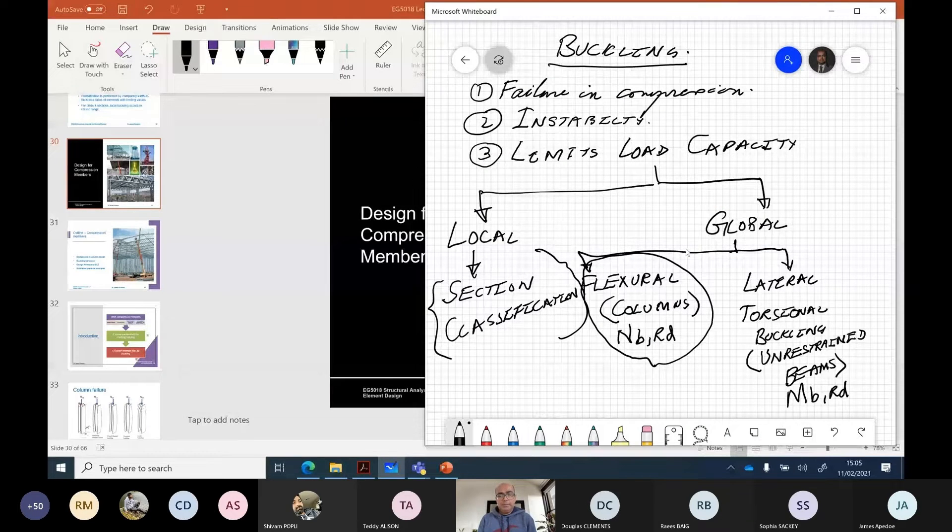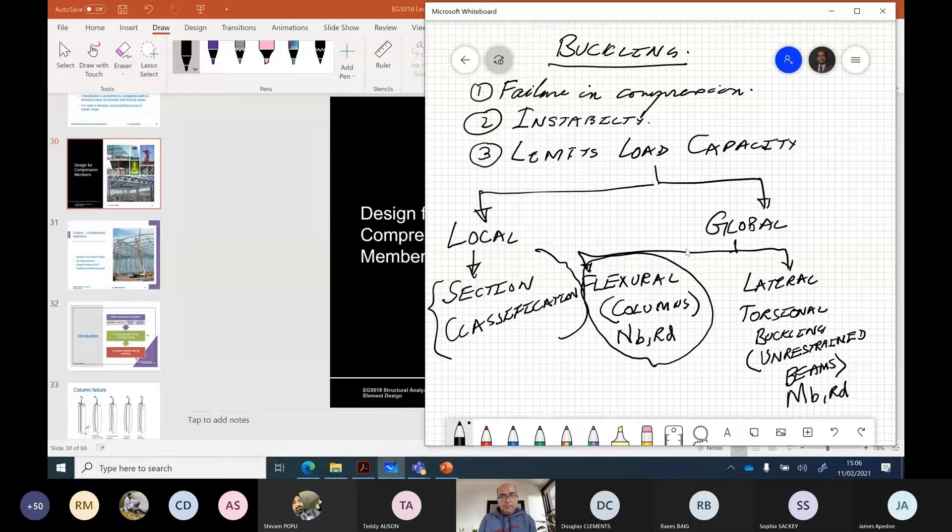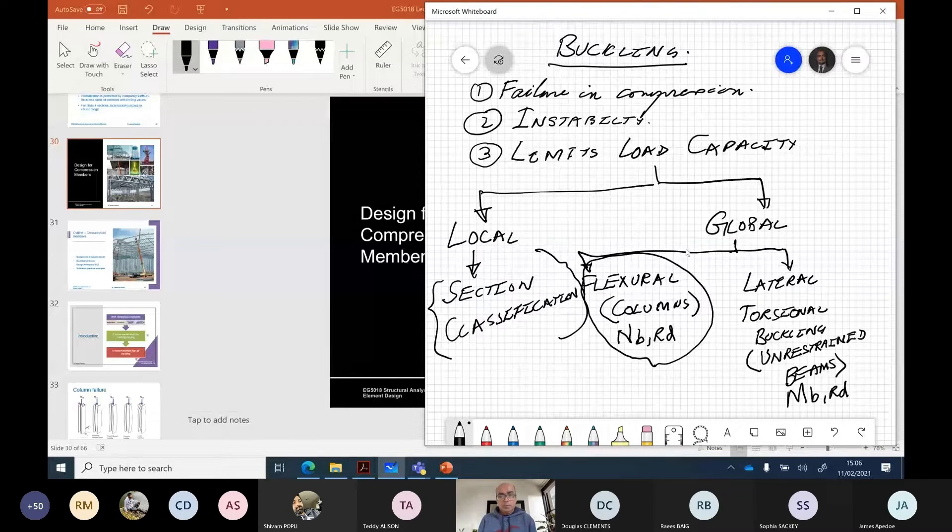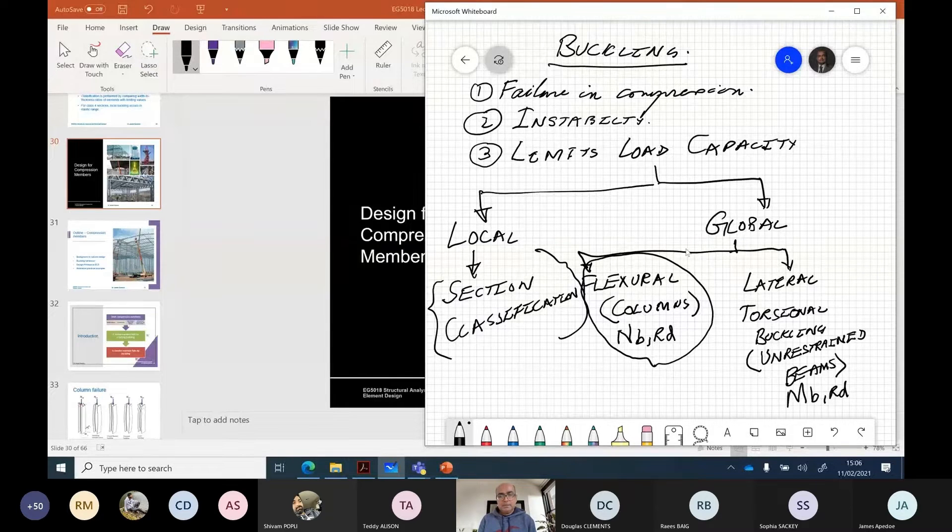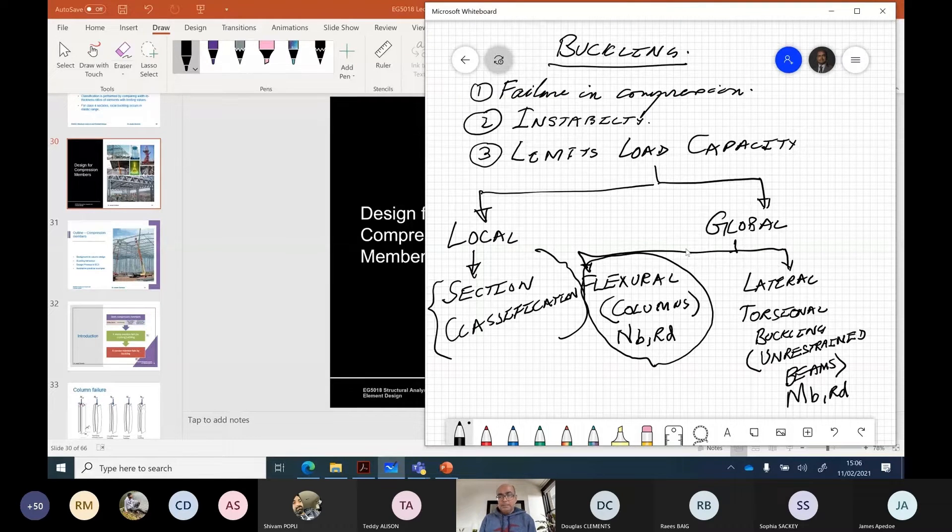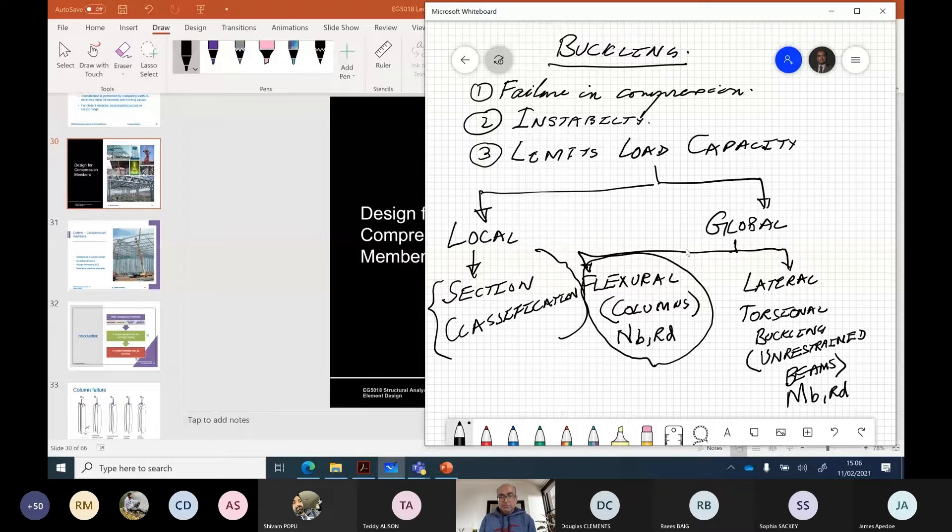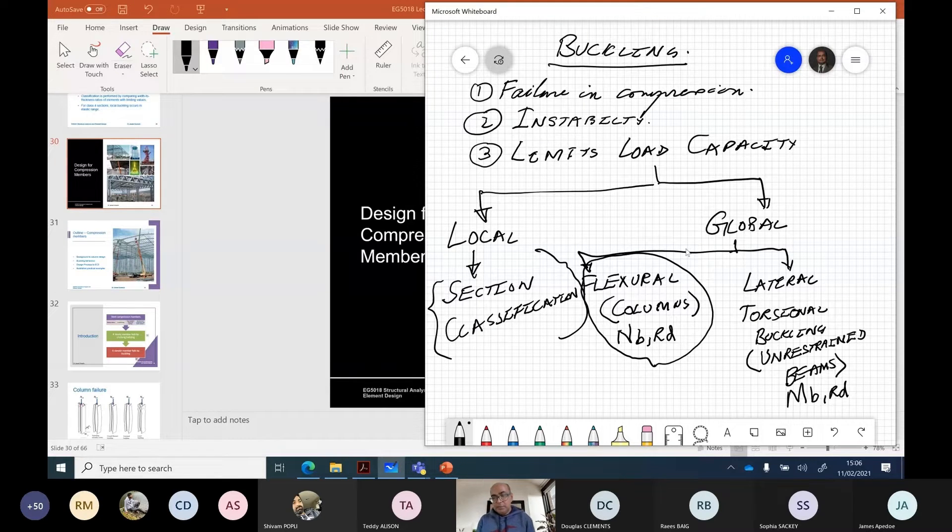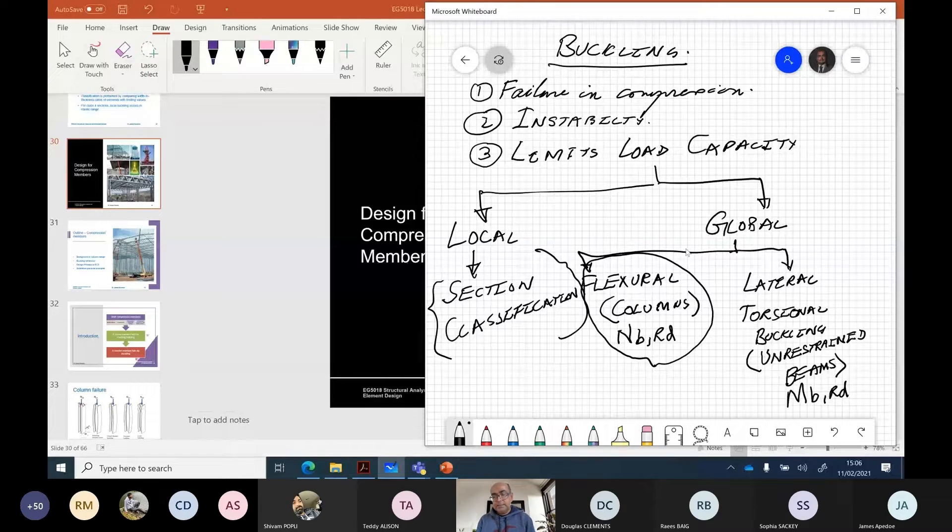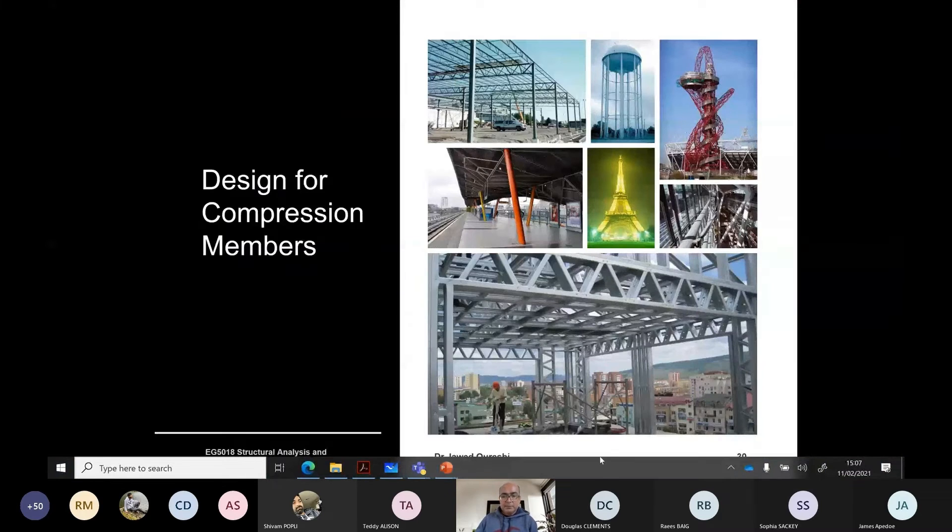Buckling happens in a variety of ways. One is local buckling, which we account for through section classification. Secondly, we have global buckling. There are two ways global buckling happens: flexural buckling and lateral torsional buckling. Flexural buckling happens in columns, and we account for it by calculating buckling resistance NBRD. We account for lateral torsional buckling by working out MBRD or buckling moment resistance.